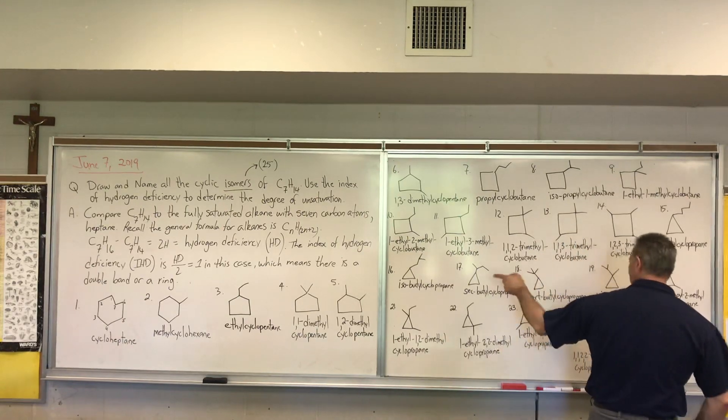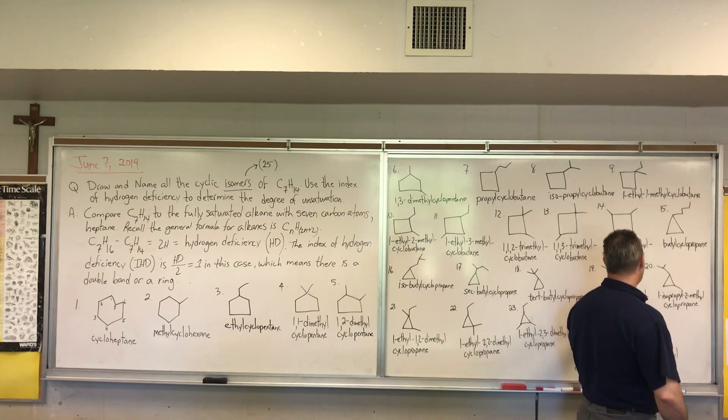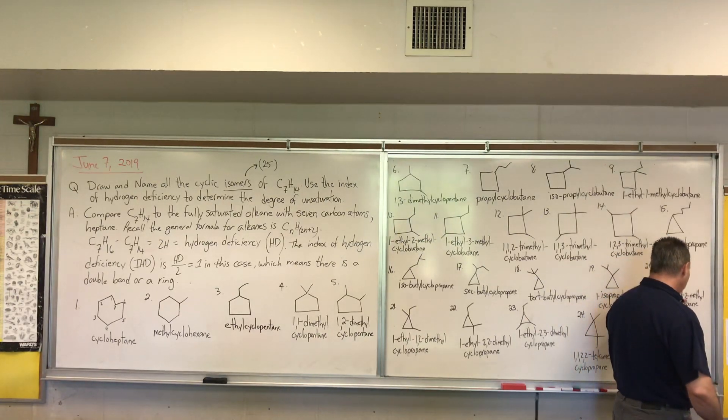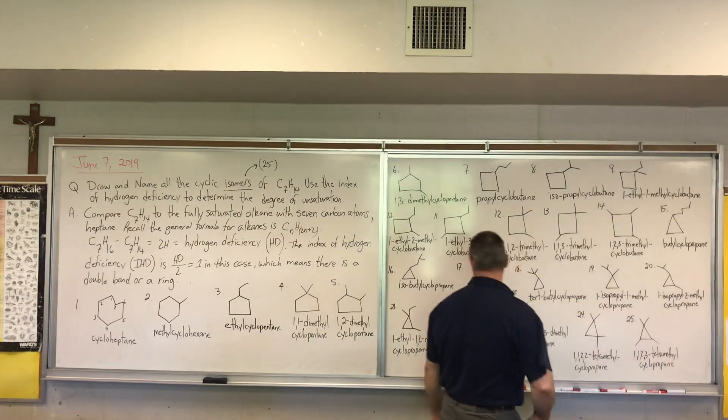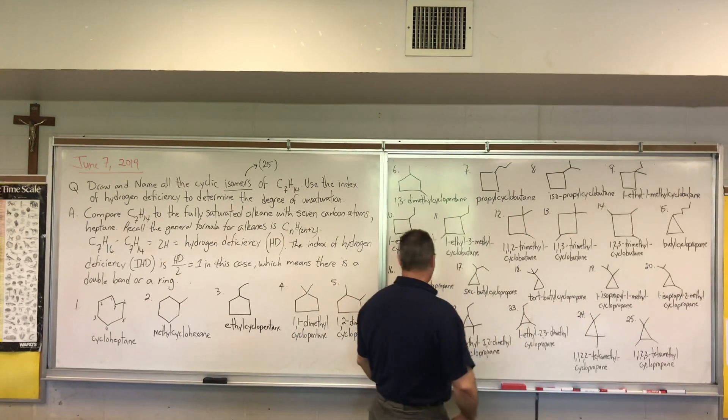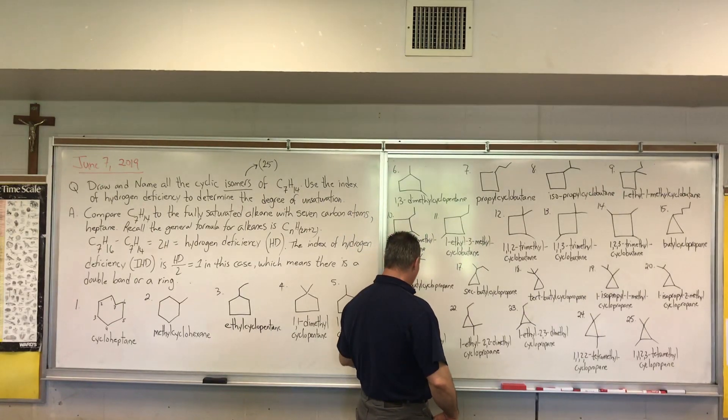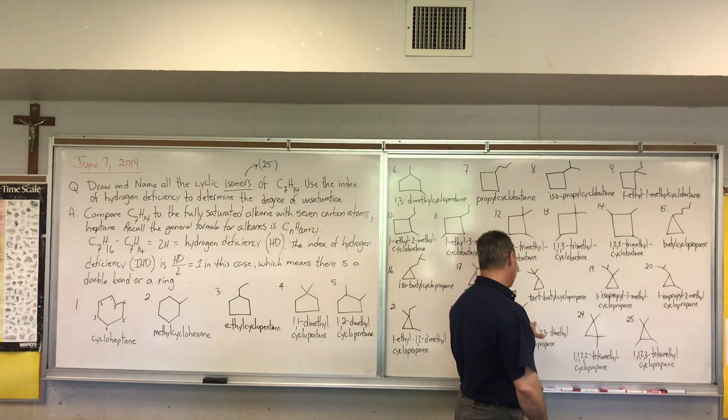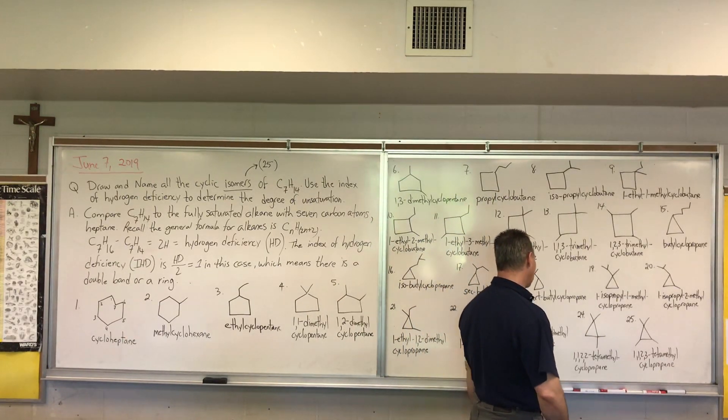Then I start playing with all the different possibilities. So one isopropyl, one methyl cyclopropane. One isopropyl, two methyl cyclopropane. And you'd be tempted to put three, but that would be again back to one, two. So now I go down with ethyl groups. So I have one ethyl, 1,2-dimethyl cyclopropane. One ethyl, 2,2-dimethyl. And finally split the methyl groups. One ethyl, 2,3-dimethyl cyclopropane.